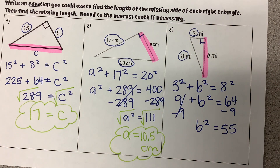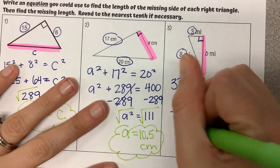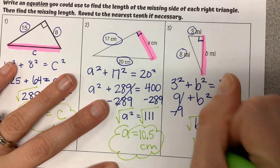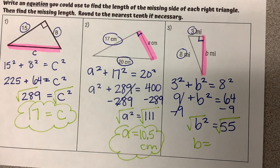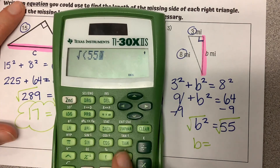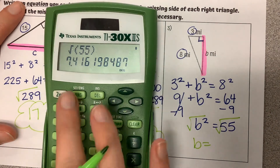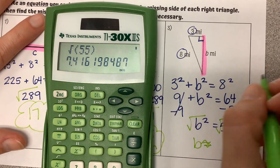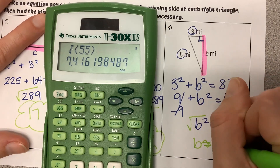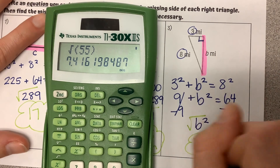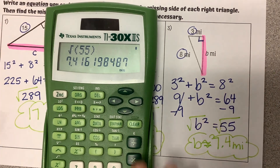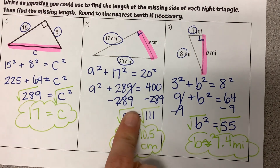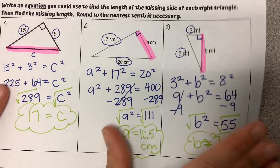For the last step, B is being squared, so the opposite is to square root. Plugging into my calculator, the square root of 55 is a long decimal. Rounded to the nearest tenth — and maybe put a squiggly line to show that you're rounding — it is 7.4, and our units were miles. So that's just the basics of plugging into the formula: solving for C, solving for A, solving for B.